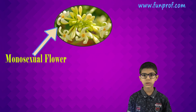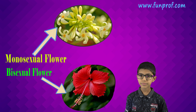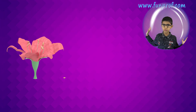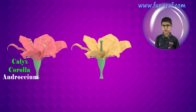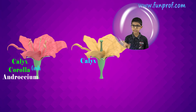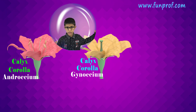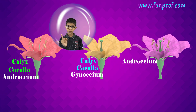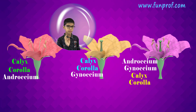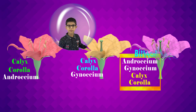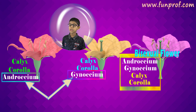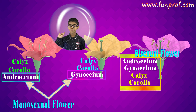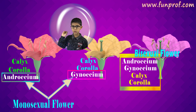Now we learn about monosexual and bisexual flowers. A bisexual flower contains calyx, corolla, androsium, and gynosium — it has both the male and the female reproductive parts. Monosexual flowers contain only one: either the androsium or the gynosium.